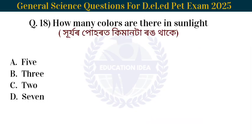Next question: How many colors are there in sunlight? The answer is seven colors.